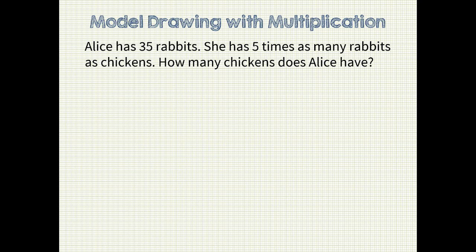This next problem is similar. Alice has 35 rabbits. She has five times as many rabbits as chickens. How many chickens does Alice have? Back to the problem — what do you think our problem statement should be? Since we need to know how many chickens Alice has, my problem statement will be: Alice has blank chickens.